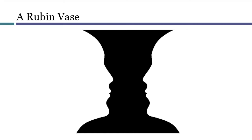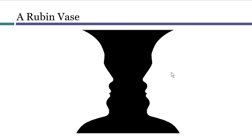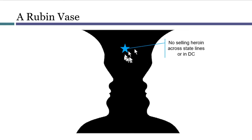On this diagram, sources of power for a government are represented by the vase, and limits on that power are represented by the faces. A star represents a governmental action that we're trying to decide whether it's constitutional. So if there's a source of power to enact a law, and that law would not violate any applicable limit, then the law is constitutional and we can position it inside the vase. An example could be a law making it illegal to sell heroin across state lines or in the District of Columbia.